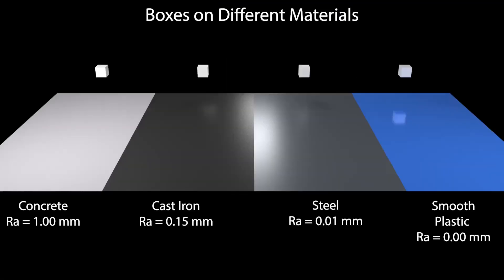In this example, the normal texture of each plane has changed to exhibit different roughnesses corresponding to concrete, cast iron, steel, and smooth plastic. As expected, the friction increases with roughness and the box stops sliding earlier on concrete compared to the smoother surfaces.